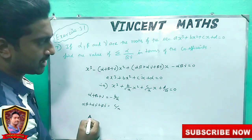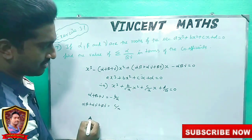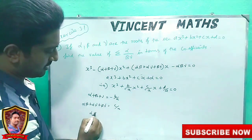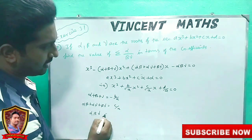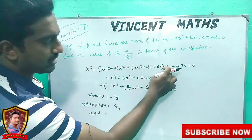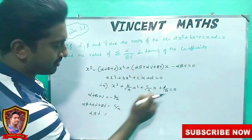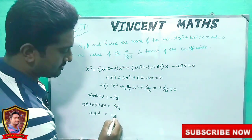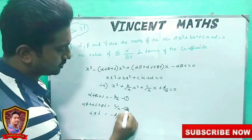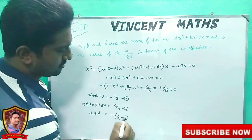Now, if you compare this constant term three at a time: alpha·beta·gamma equals minus d by a. So this is relation 1, 2, 3.